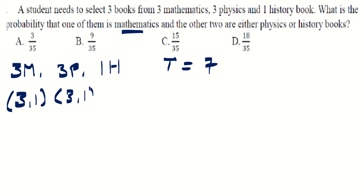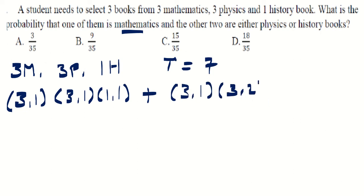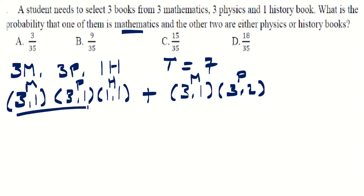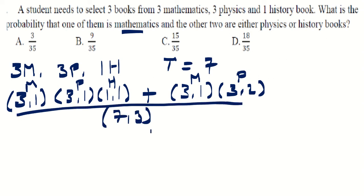Or the first is mathematics and both others are physics — C(3,1) × C(3,2). There is no other possibility since history has only one book. The denominator is C(7,3), selecting three books out of seven.